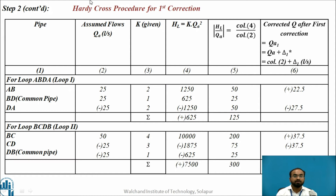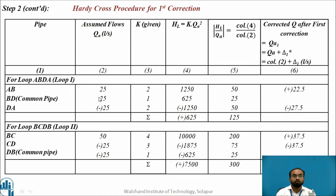Column 2 contains the assumed flow rates calculated earlier, including signs — clockwise positive, anticlockwise negative. Column 3 is the K value, and column 4 is HL using the formula K into Q squared. I know K from column 3 and Q from column 2. For every loop I take the summation: for loop 1 the summation of HL is 625, and for loop 2 it is 7500. Then I calculate HL divided by Q(A) in absolute form — for AB it is 50, for BD it is 25, for DA it is 50, giving a summation of 125. For loop 2 the summation of HL by Q(A) is 300.